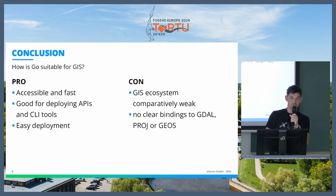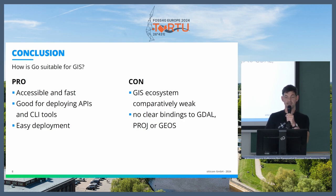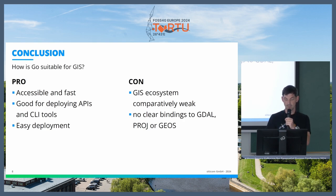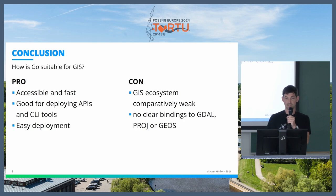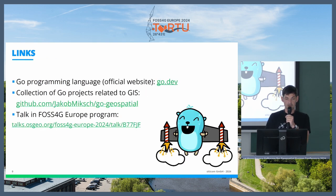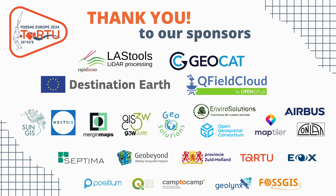What is Go suitable for in GIS? First of all, it's accessible and fast. It's good especially for APIs and command line tools, and easy for deployment. However, I feel the GIS ecosystem is comparatively weak — there are libraries for specific things, but often only one maintainer, update cycles are slow, and there are no clear bindings to GDAL, PROJ, or GEOS. Comparing to Rust, which is also a newer language, Rust has much clearer bindings to GDAL, PROJ, and GEOS. But if you just want to create a nice API or command line tool with a specific use case, Go is definitely an interesting alternative. Here are some links, and thank you for your attention.